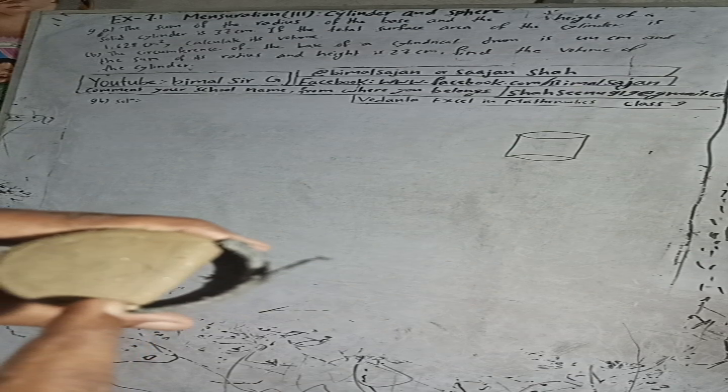The diameter is from this to this, and radius is from the center to any point here. So sum of this radius and height, r plus h, is 27. So we have to find the volume. Let's start.